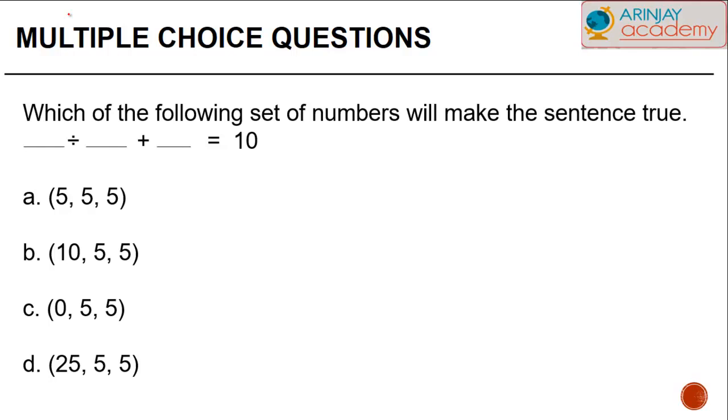A is 5, 5, 5. B is 10, 5, 5. C consists of 3 numbers: 0, 5, 5. And D also consists of 3 numbers: 25, 5, 5.